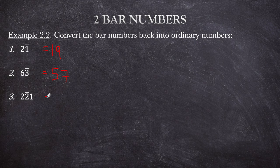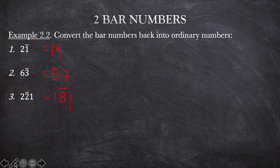For 2 bar 21: we need to subtract 1. That gives 1, and then 8, 1 — so 181.